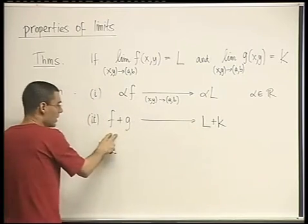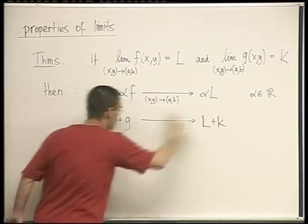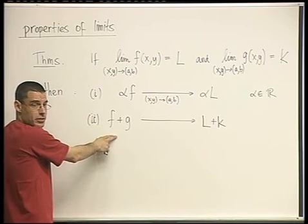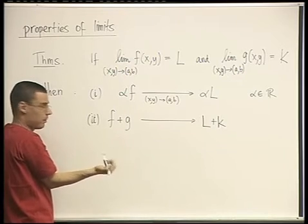So this is f of xy plus g of xy as xy goes to ab converges to L plus k. But when you see it like this, if I just put this on the board, there would be no way to know if this is one-dimensional or two-dimensional, or three-dimensional for that fact. Because it's the same. Same property.